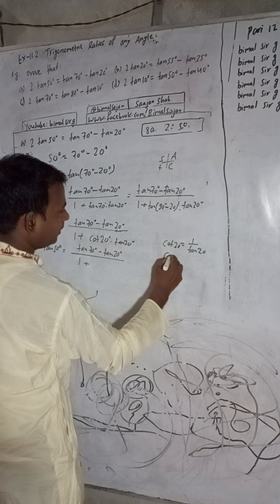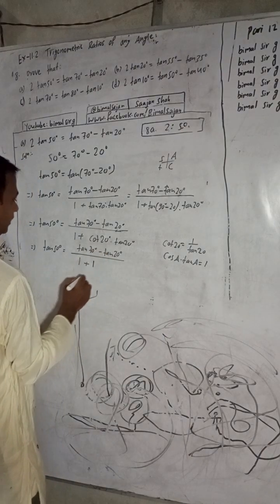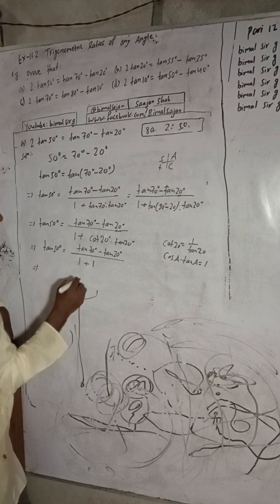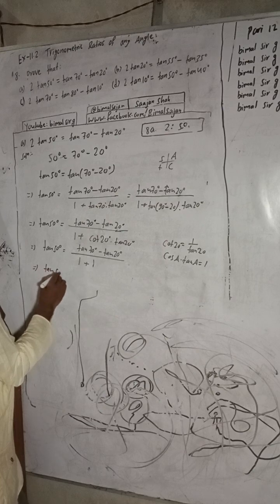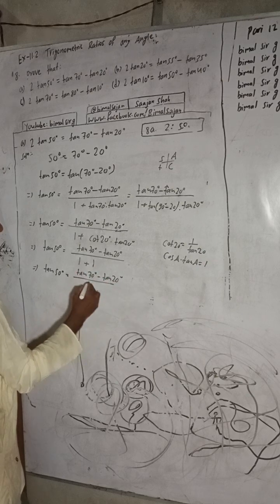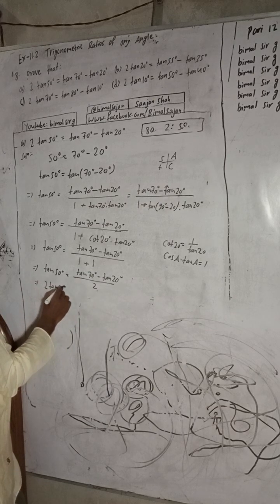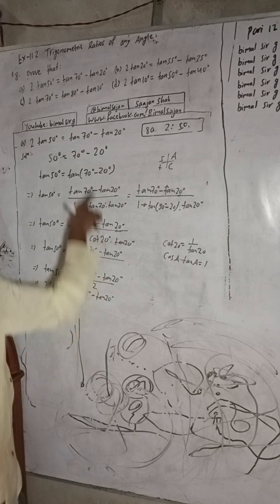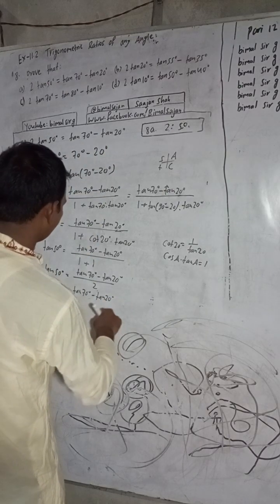Now cross-multiplying: 2·tan50° = tan70° − tan20°. See here: 2·tan50° = tan70° − tan20°. This is proved. Question 8a is proved.